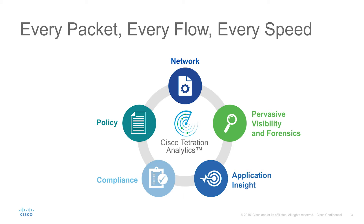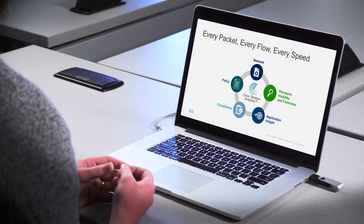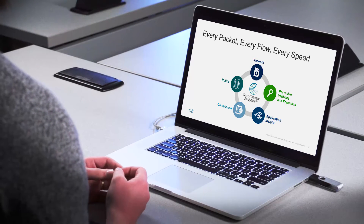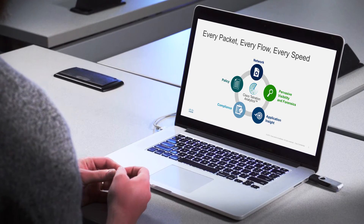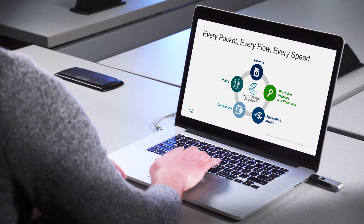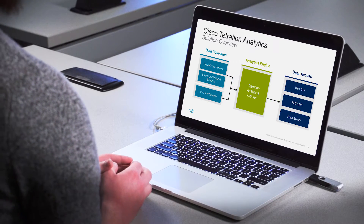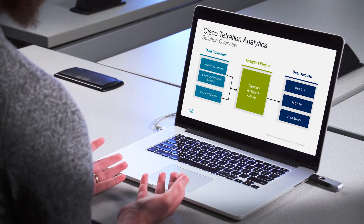Finally, in near real time, the Cisco Tetration analytics platform can monitor every single packet that traverses your network — whether that's north to south or east to west — for compliance with the network segmentation rules that you wish to have in place, and very quickly alert you if any packet is out of policy.